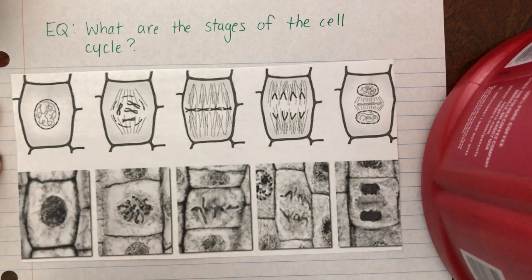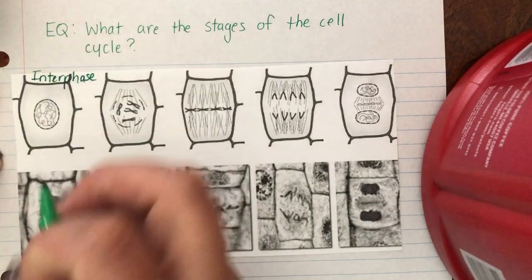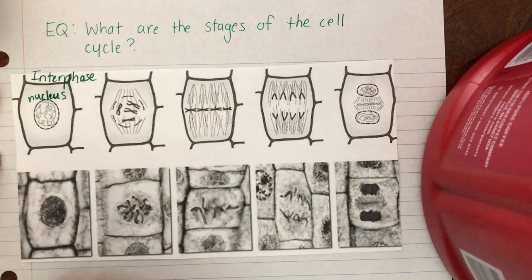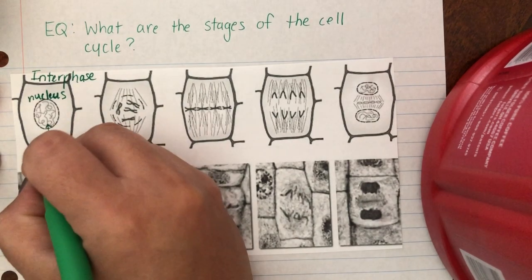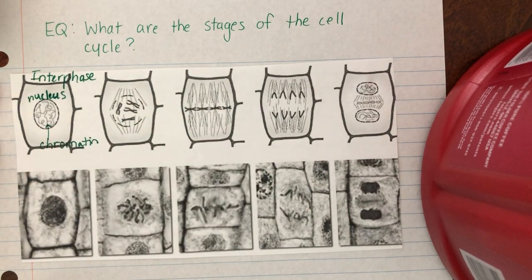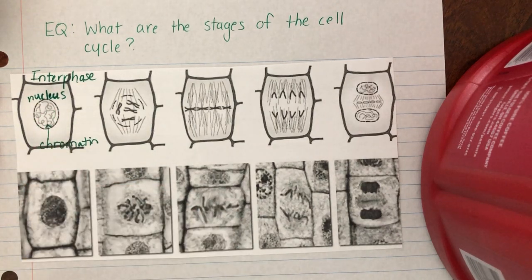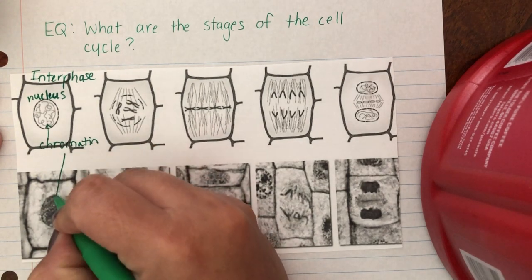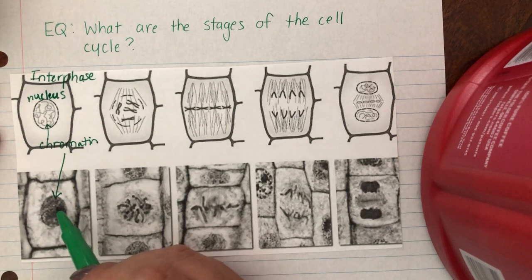This very first one is a cell that is at interphase. You can see the nucleus, and inside this stuff that you see in there is called chromatin. It's the material that eventually makes chromosomes, but they haven't yet been formed, so what you see is just a jumble of chromatin. The picture below, the image, it looks exactly the same. You can see the chromatin floating around.